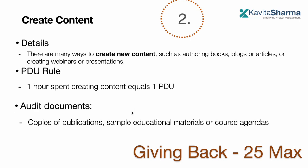The second free way of earning PDUs is to write content — you can write a book, a blog, or an article. One hour spent creating content equals one PDU. You need to support that with publications, materials, or agendas.